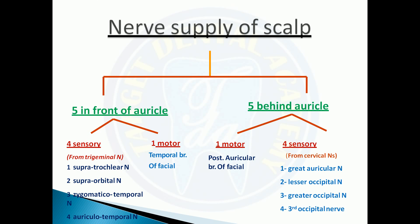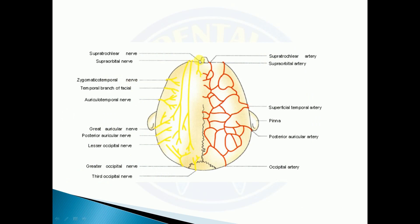The nerve supply of the scalp has five nerves in front of the auricle and five behind the auricle. In front of the auricle, four are sensory: the supratrochlear nerve, supraorbital nerve, zygomatico-temporal nerve, and auriculo-temporal nerve. One is motor: the temporal branch of the facial nerve.